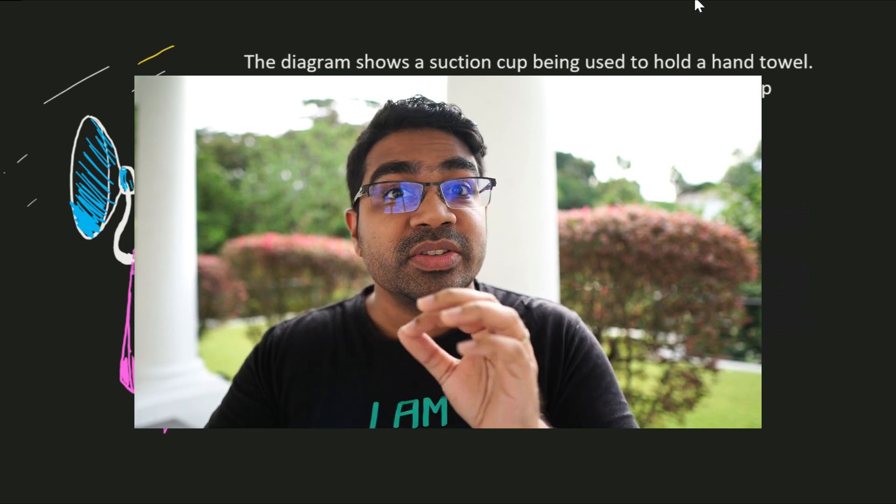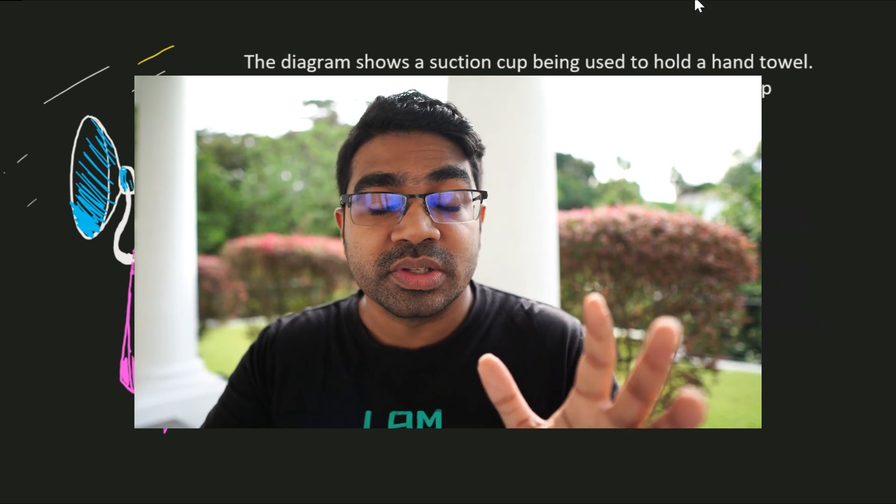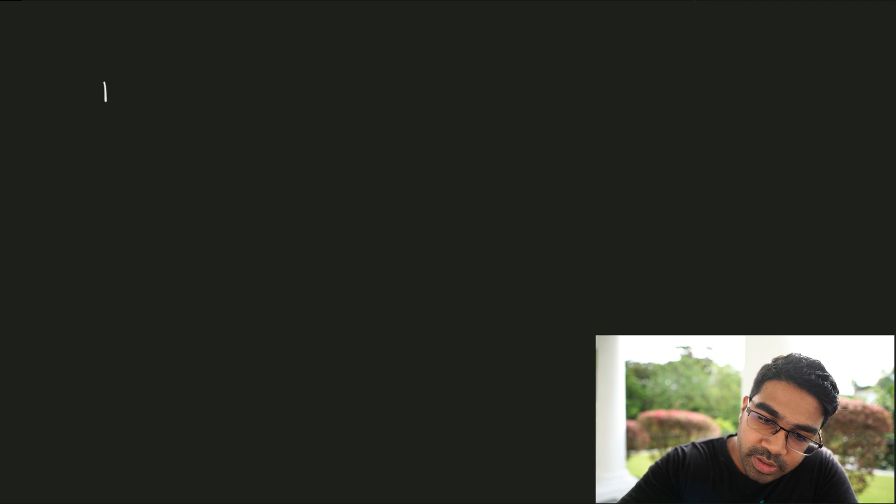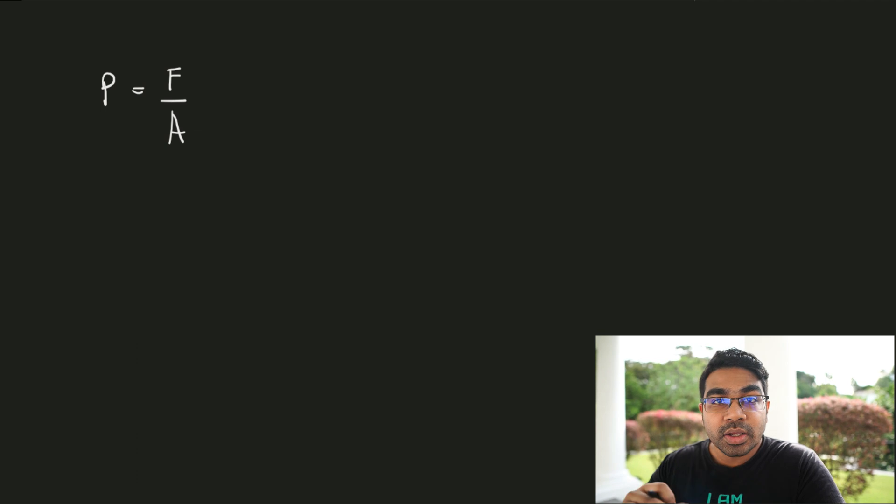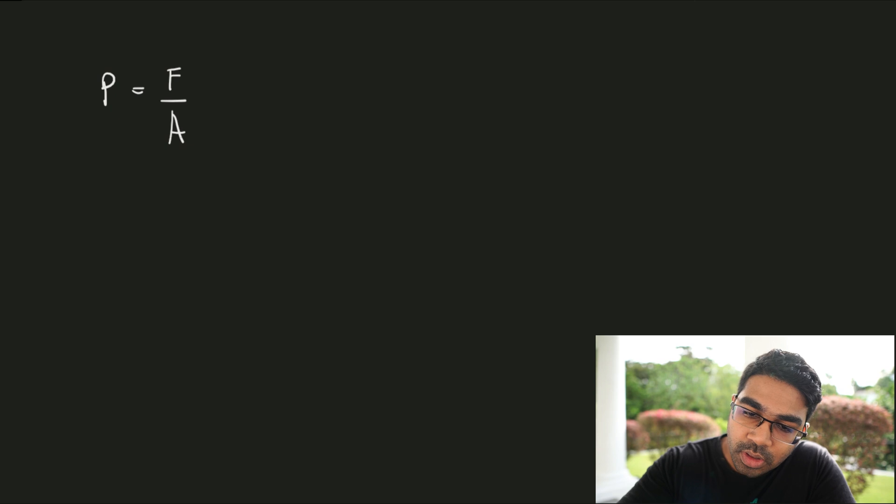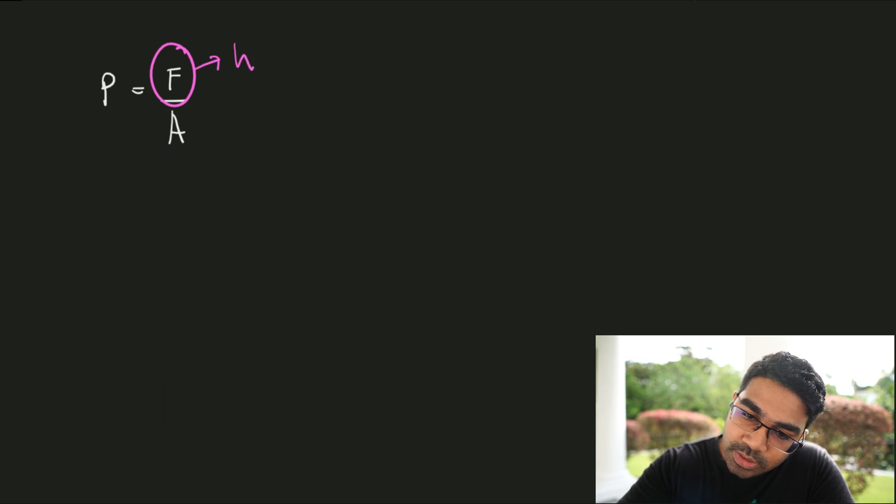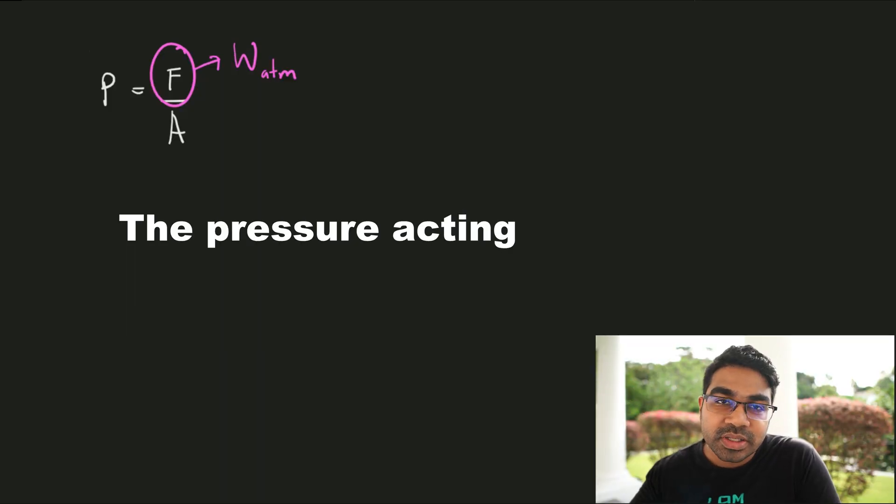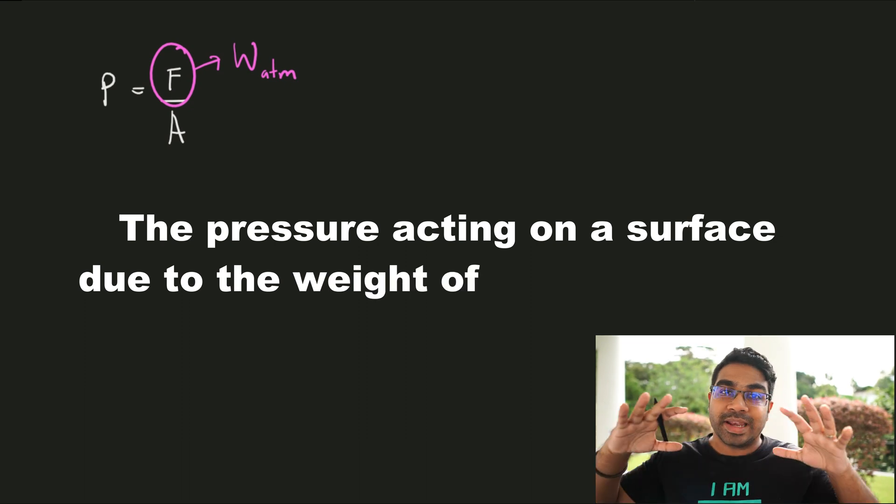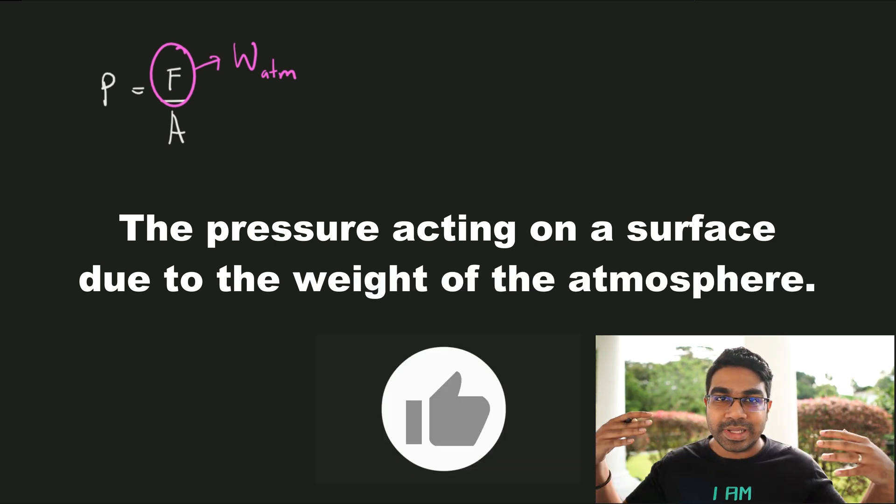Before we try this question, let's just review what atmospheric pressure is. Pressure is by definition the force per unit area. The force acting on one unit of area. And so when it comes to atmospheric pressure, what is contributing the force that causes the pressure? This will be the weight of the atmosphere. So we can define atmospheric pressure as the pressure acting on a surface due to the weight of the atmosphere or the surrounding air.